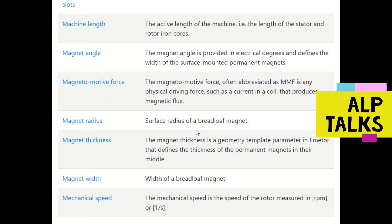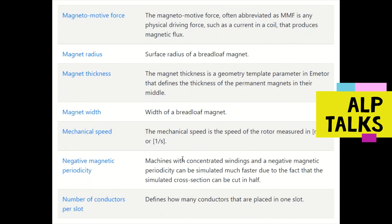Magnet thickness is a geometry template parameter that defines the thickness of the permanent magnet in the middle. Magnet width is the width or breadth of the magnet.